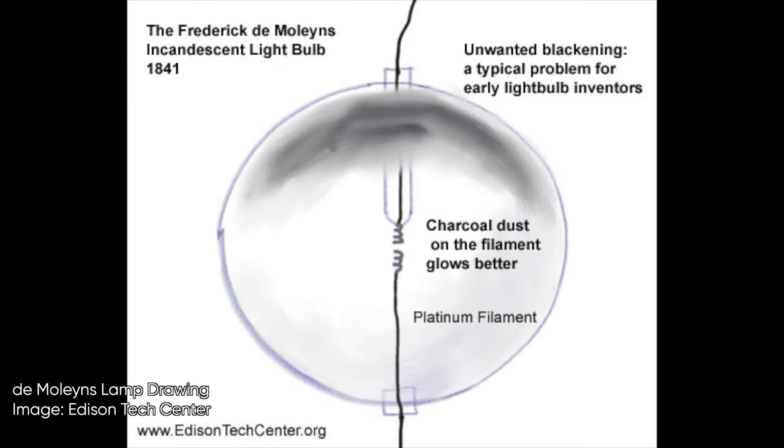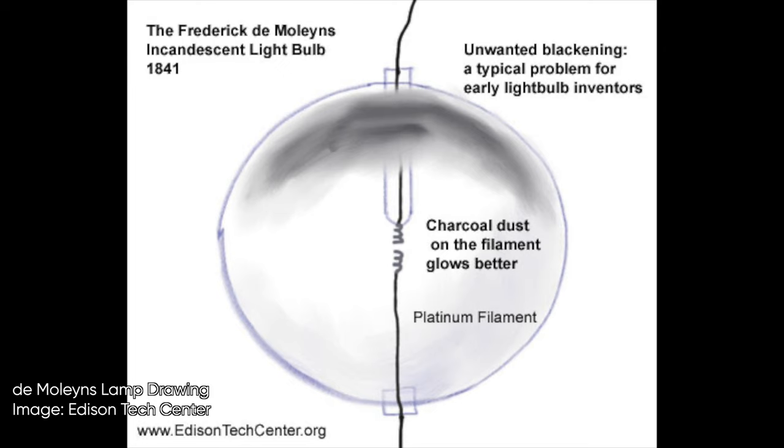In 1841, British inventor Frederick de Molaines patented a design for an electric heated powder charcoal between two platinum wires in an evacuated glass tube. This was not commercially viable as the platinum filaments were too expensive and they burned out too quickly.